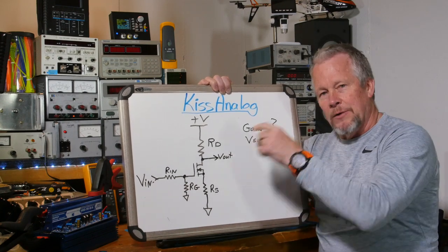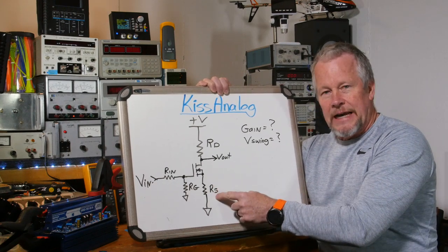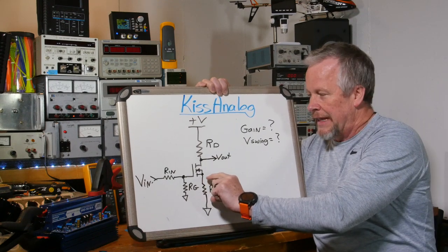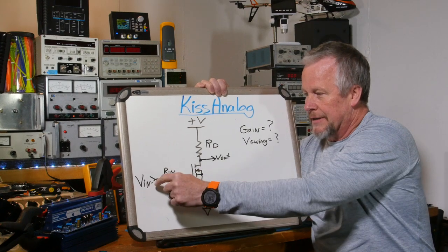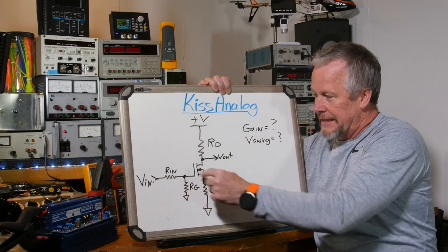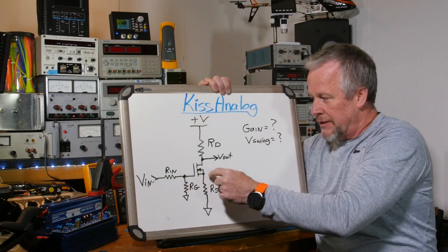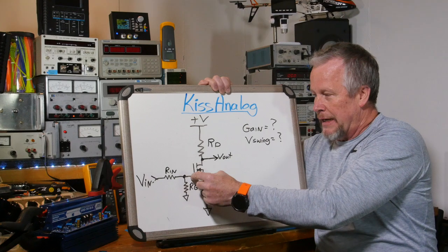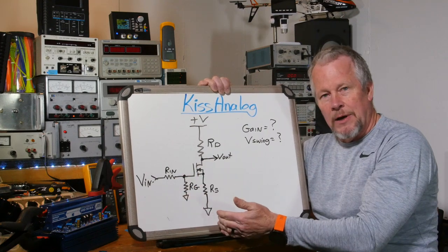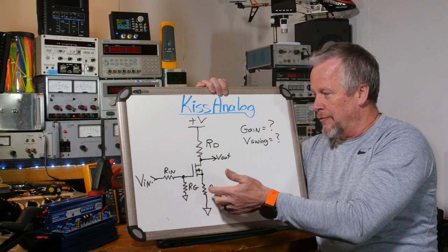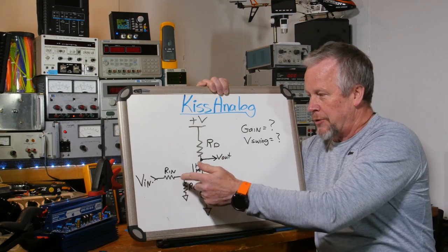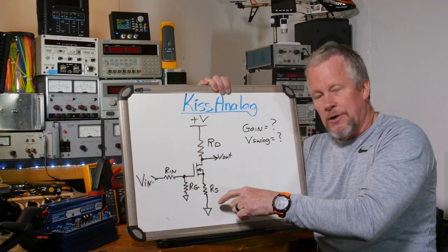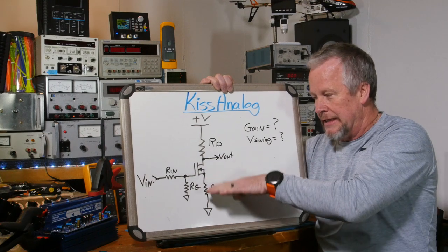Putting the source resistor in is like negative or degenerative feedback, because as current flows through it, it develops a voltage that subtracts from what the gate can provide. If we've got 12 volts and this transistor needs 2 volts gate-to-source to turn on, we end up with 10 volts. If more current flows and the source voltage grows, it takes away the drive and starts turning the FET off. So it self-regulates: too much current turns it off, too little turns it on more — it just settles and idles.